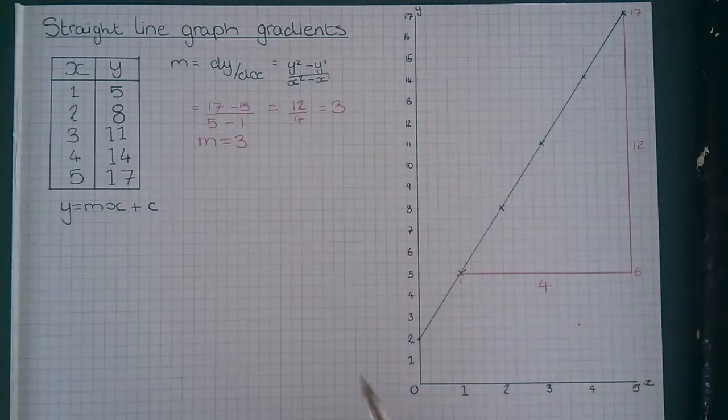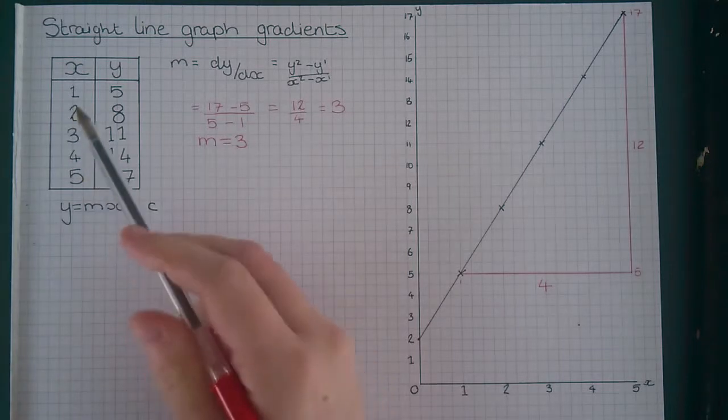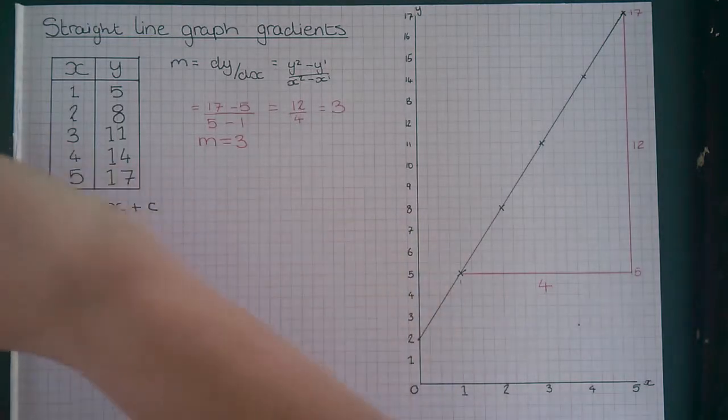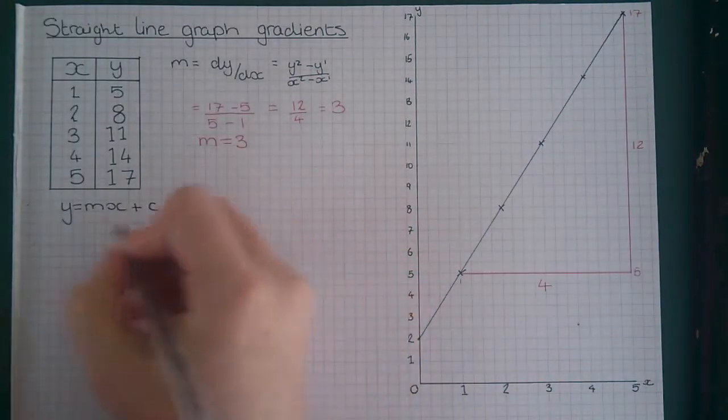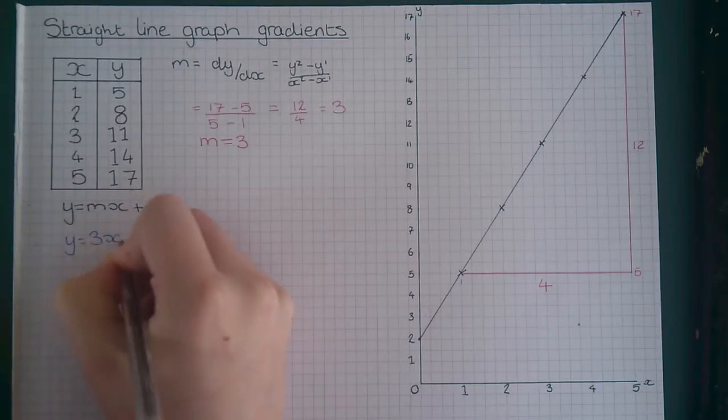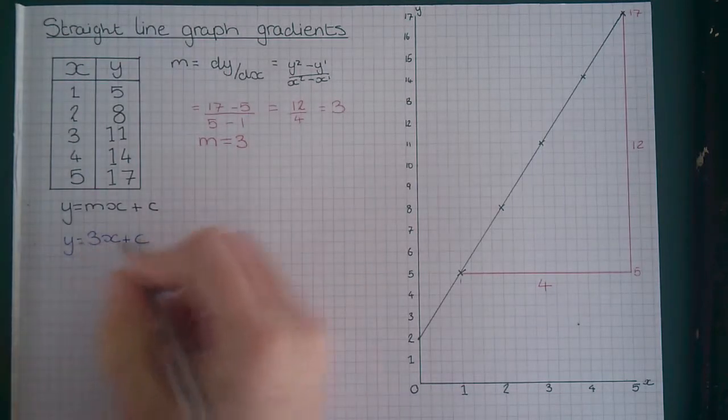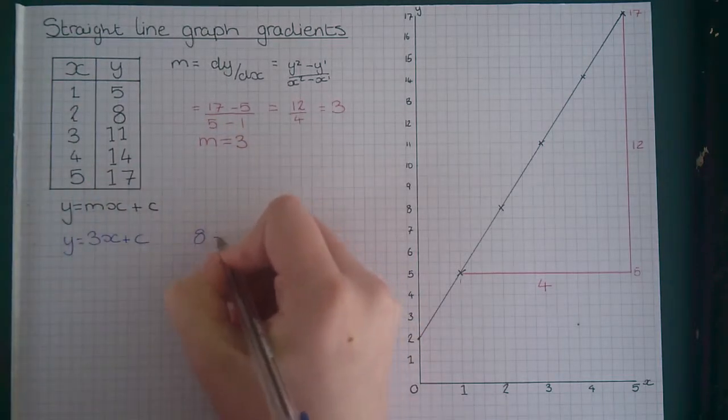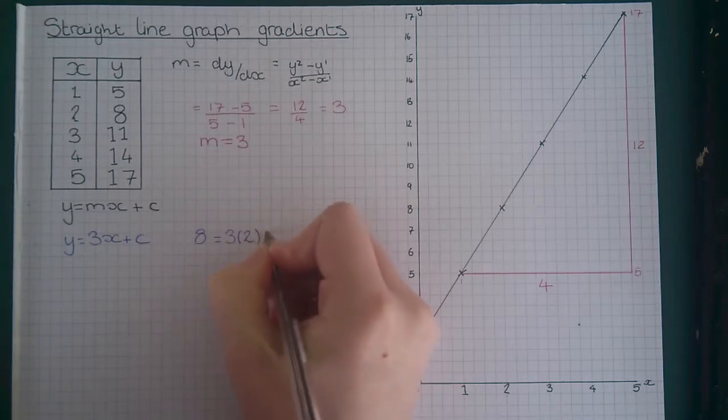To work out the y-intercept, we put this value of m into our equation, as well as corresponding values of x and y. So I'm going to use 2 and 8. The first thing to do is write y equals 3x plus c, just using our gradient we just worked out. I'm going to use value of y, 8, which means value of x, 2. 3 times 2 plus c.